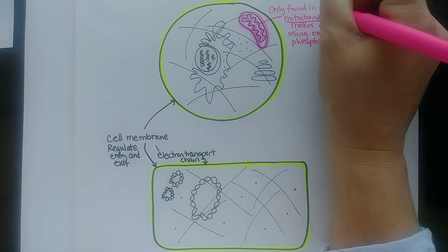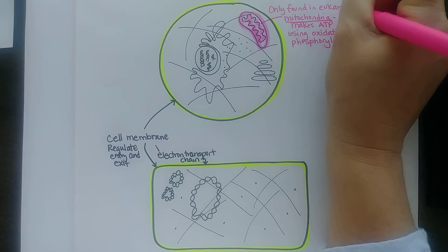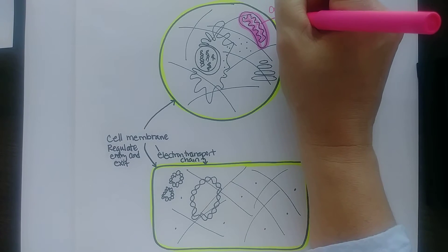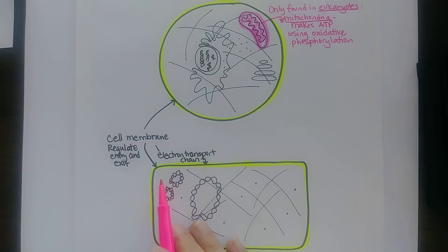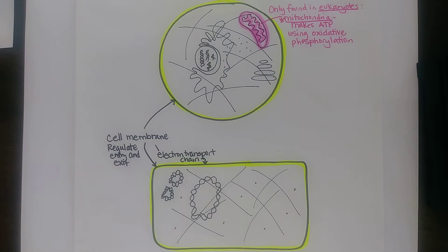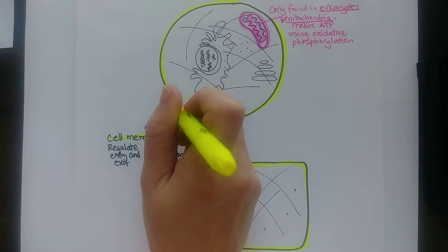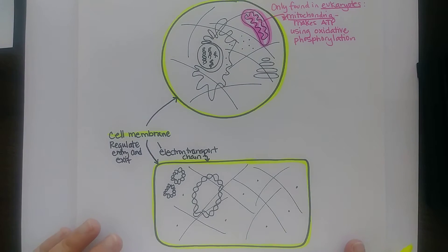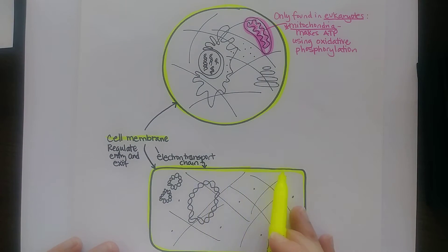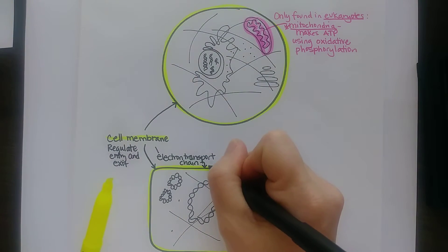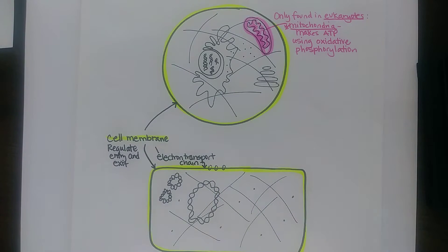I want to emphasize that prokaryotes certainly can make ATP. They can make it through glycolysis inside their cytoplasm, and they can also make it in their cell membrane — they have proteins in there that are part of their electron transport chain. Not all bacteria are going to have that, but a lot of them will.